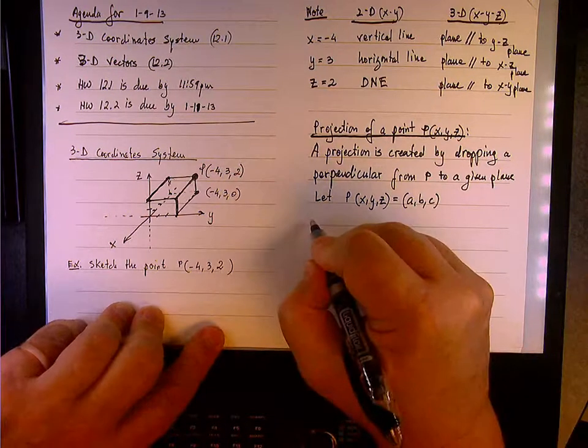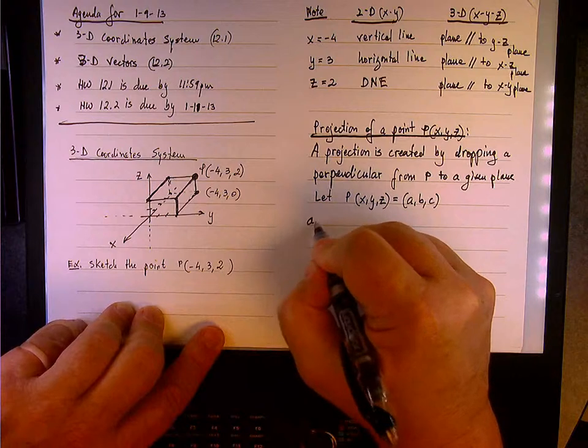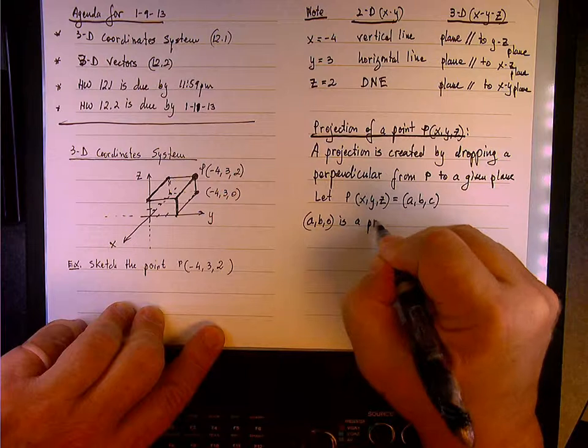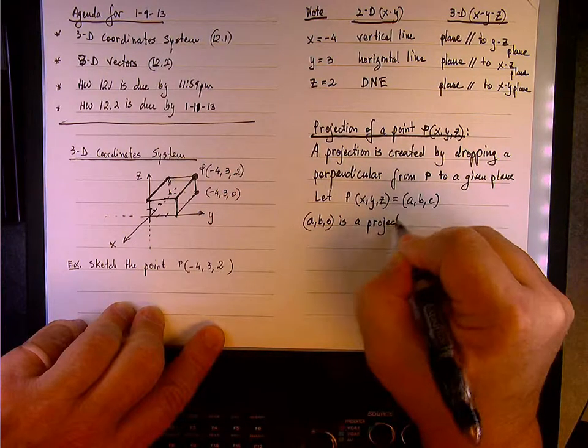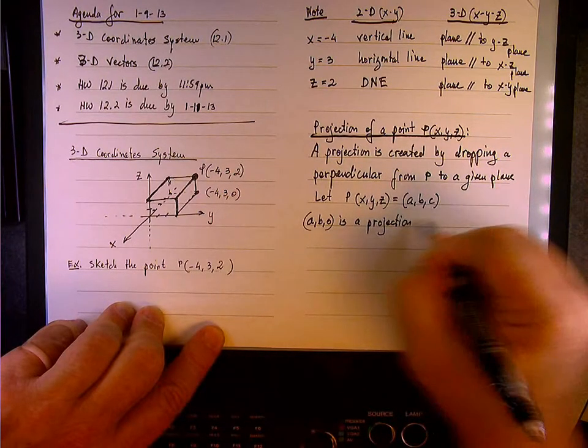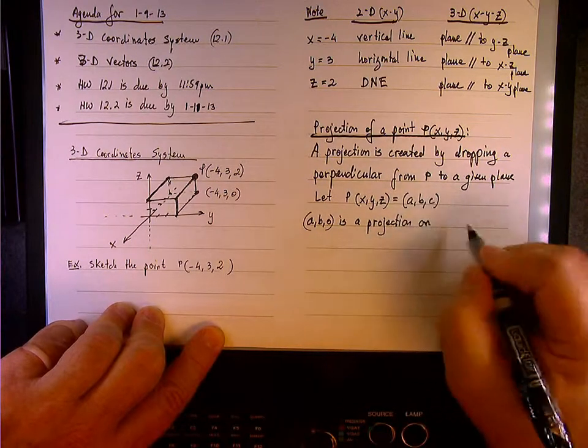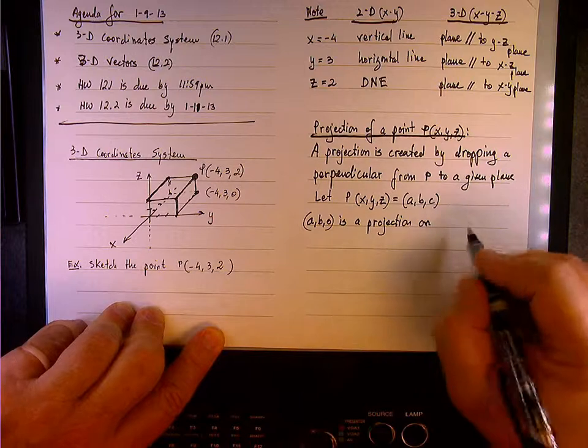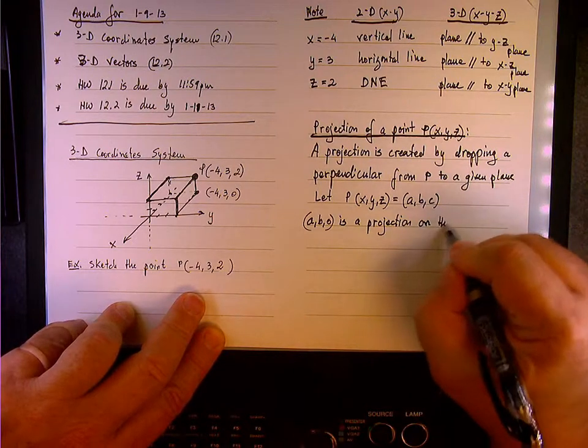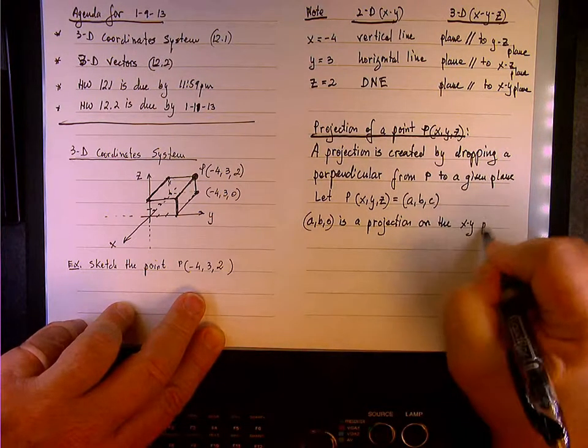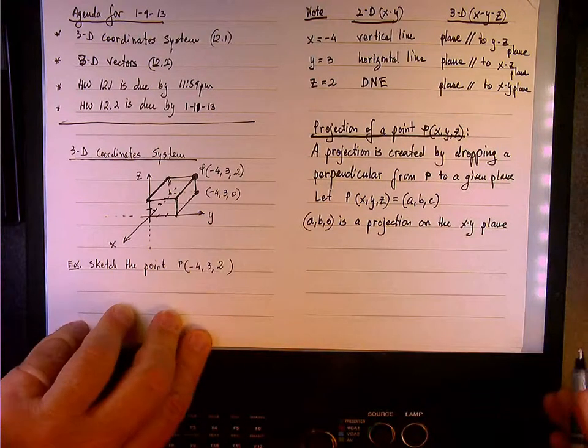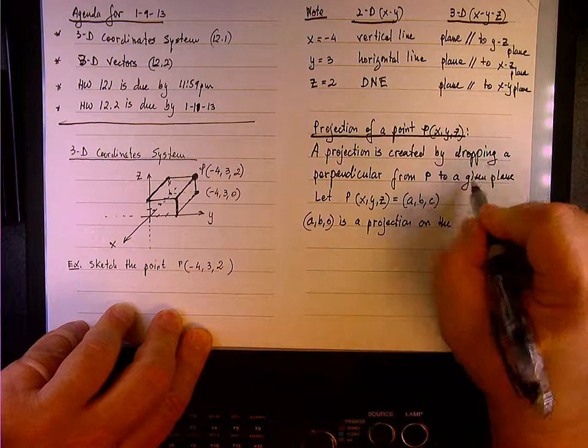So we're going to say that the point A, B, 0 is a projection of P on what plane? On the xy plane.